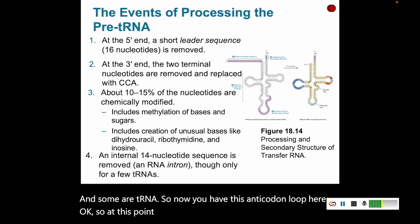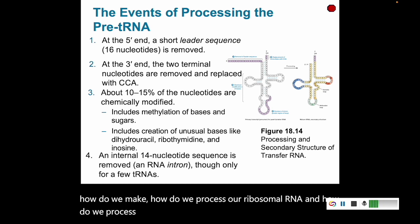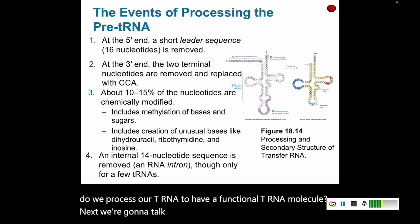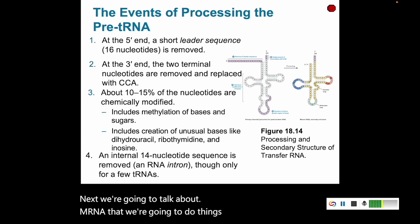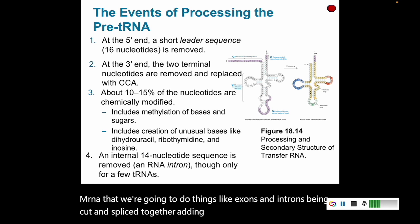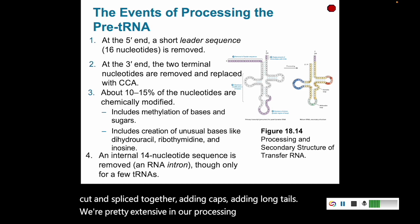At this point, you can describe how we make ribosomes, how we process ribosomal RNA, and how we process tRNA to have a functional tRNA molecule. Next, we're going to talk about mRNA — things like cutting and splicing exons and introns, adding caps, and adding long poly-A tails. We're pretty extensive in our processing of mRNA. I'll see you back in a little bit.